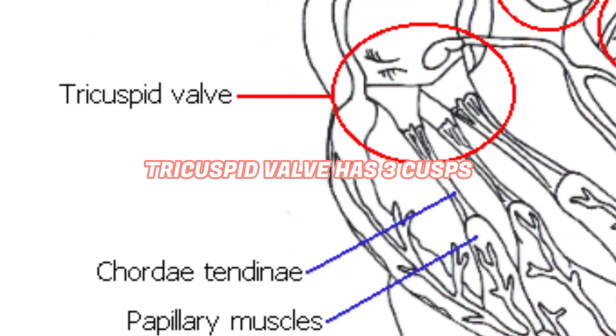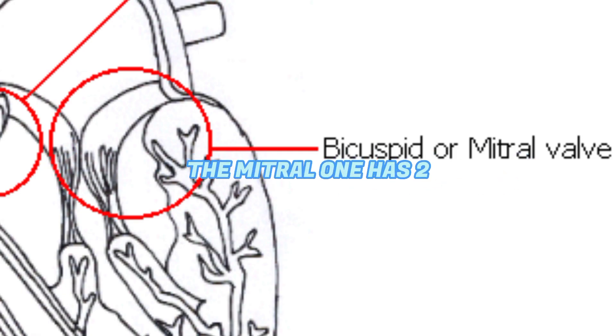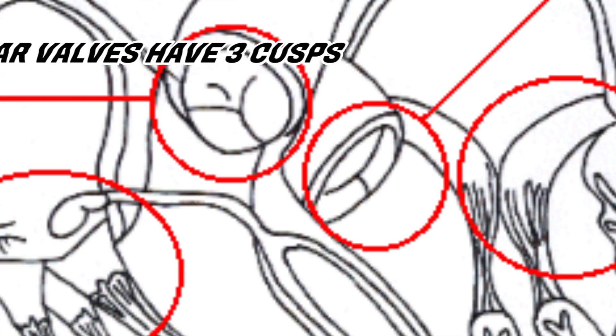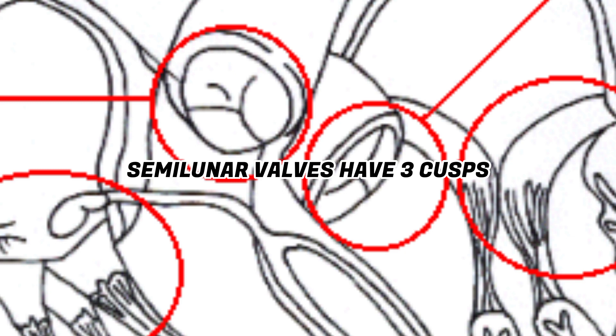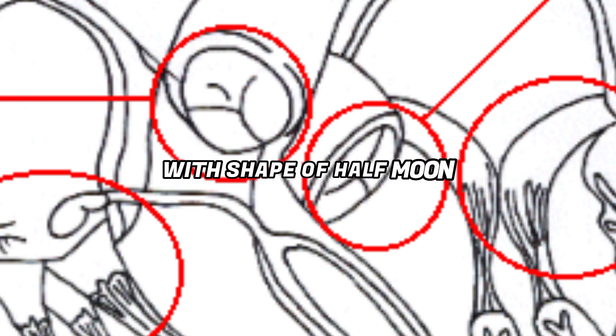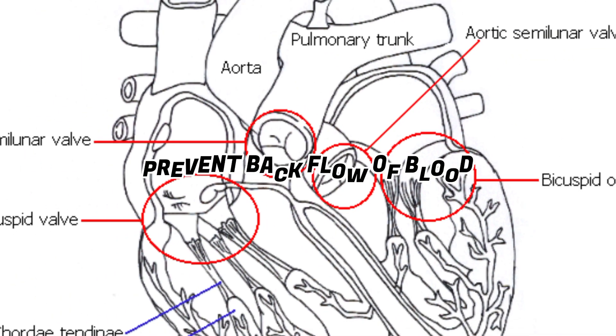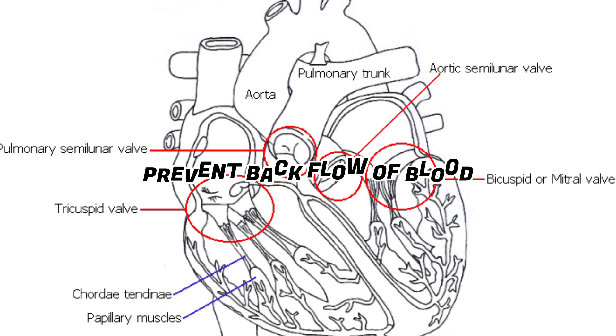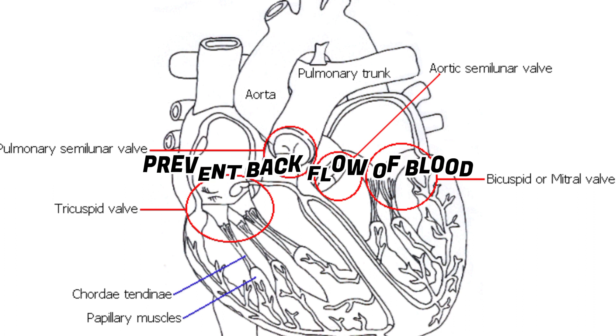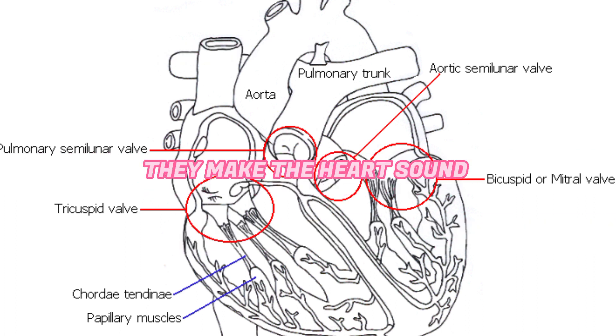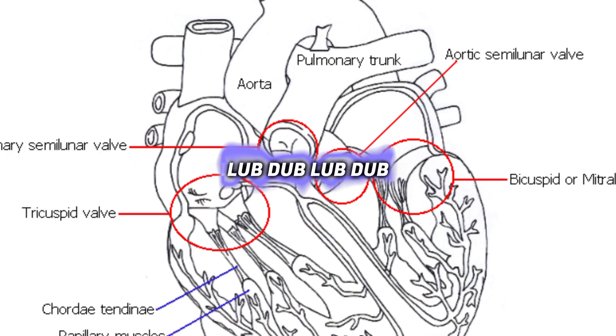The tricuspid valve has three cusps; the mitral one has two. The semi-lunar valve has cusps in the shape of a half moon. These valves prevent backflow of blood; they make the heart sound lup-dup, lup-dup.